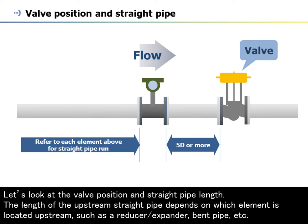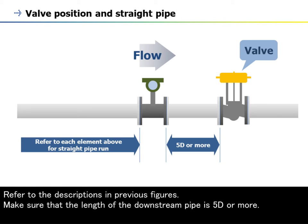Let's look at the valve position and straight pipe length. The length of the upstream straight pipe depends on which element is located upstream, such as a reducer or expander, bend pipe, etc. Refer to the descriptions in previous figures. Make sure that the length of the downstream pipe is 5D or more.